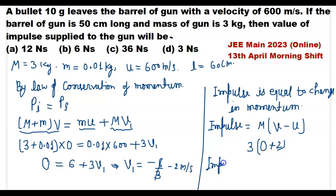The impulse value will be 3 times 2, that means 6 newton second. This is our answer, and it matches option number B.